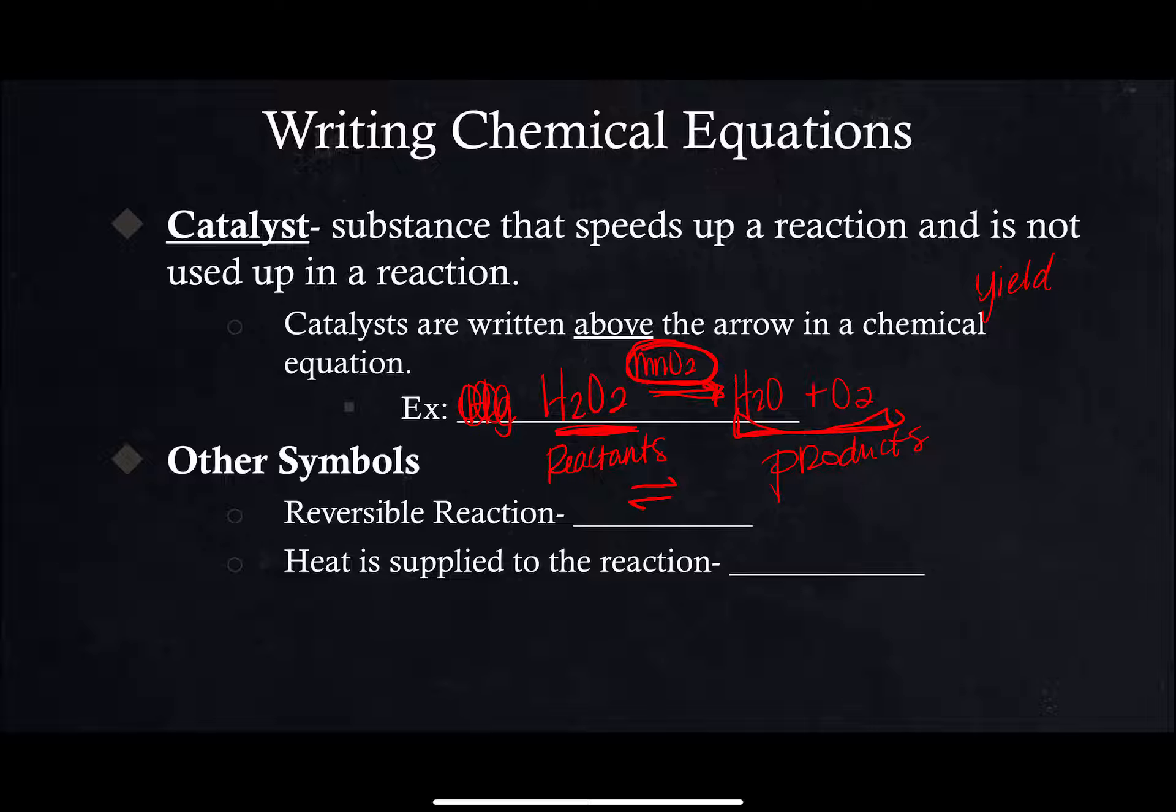Heat is supplied to the reaction, so there's two ways that you can write that. You can write the arrow and you can put a triangle over it, that triangle is known as a delta, that's a Greek letter, or you can write the arrow and you can write heat over it. Both of those would indicate that heat is supplied to the chemical reaction.